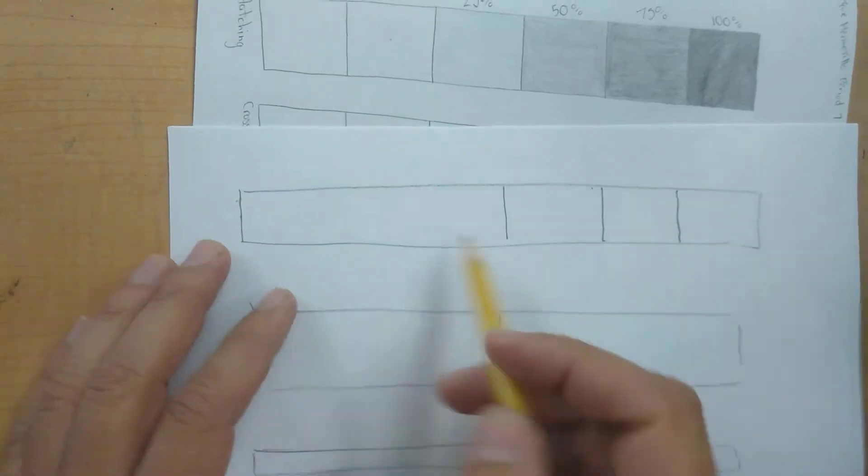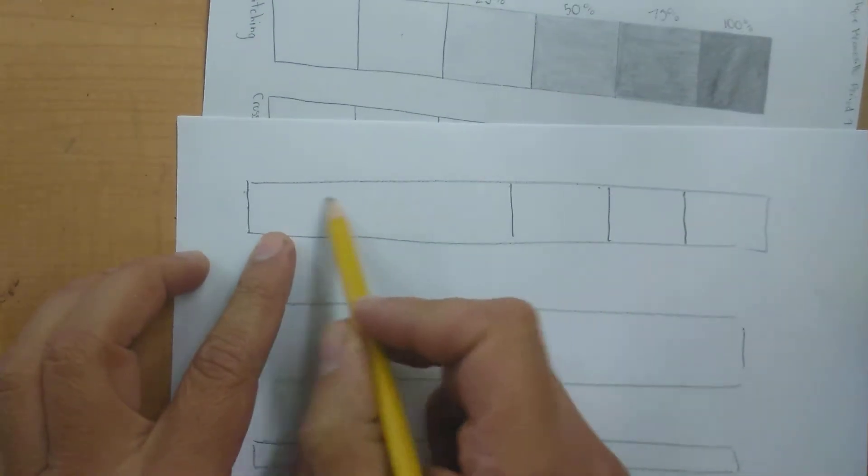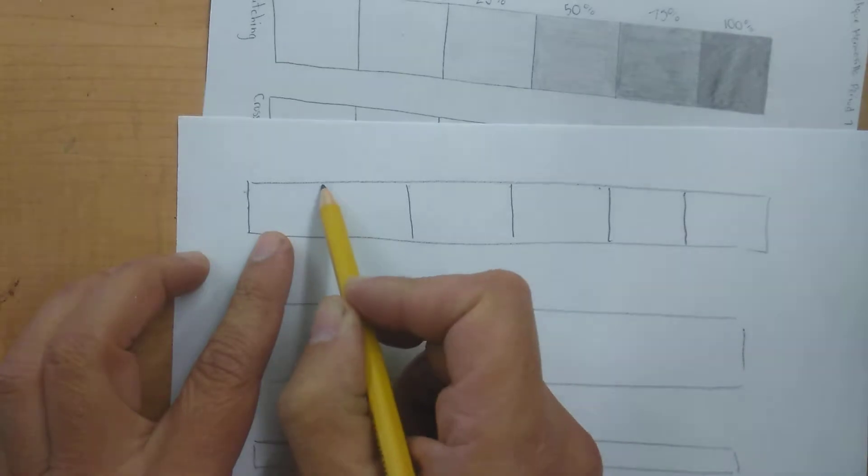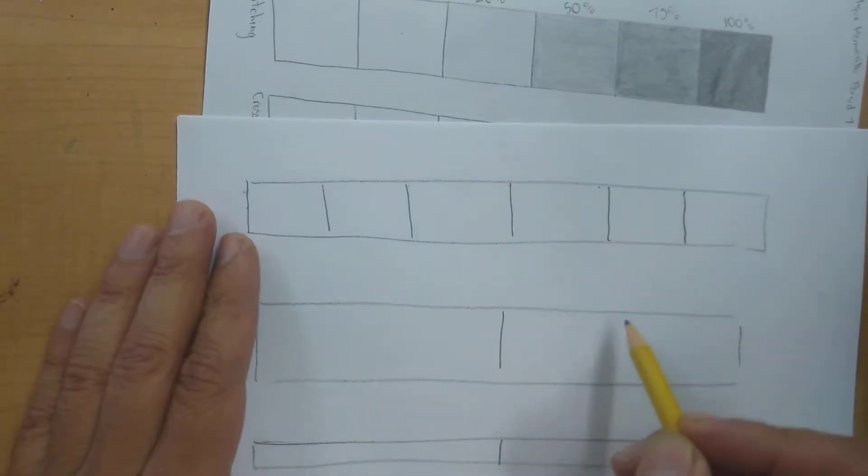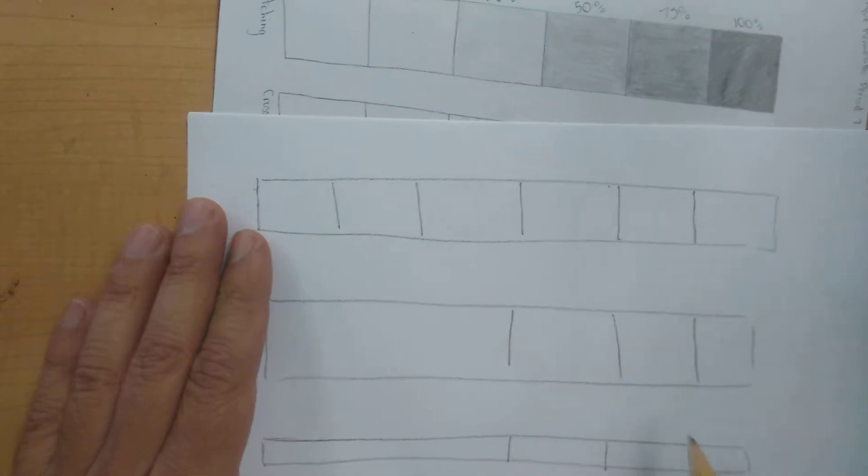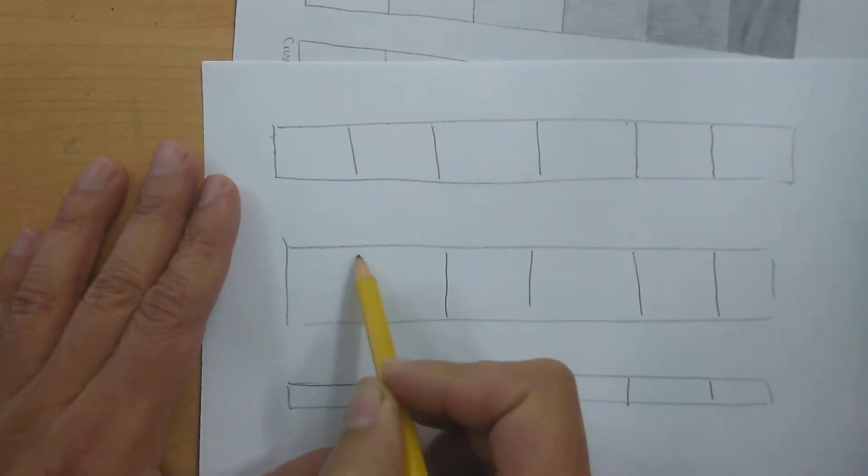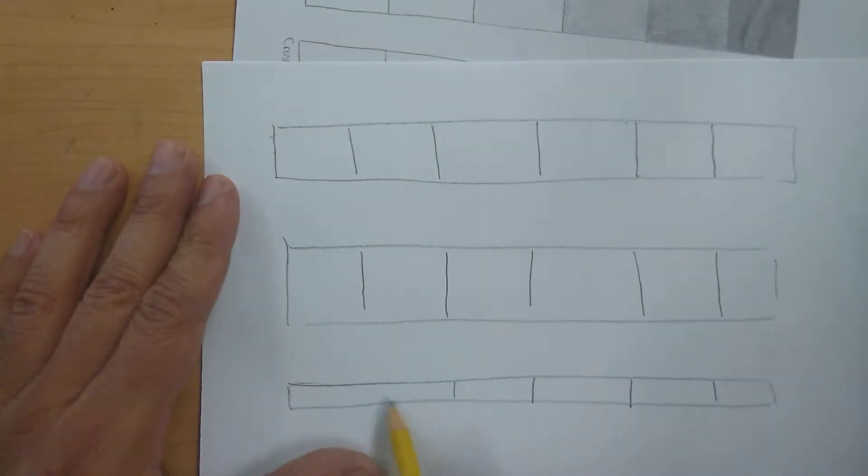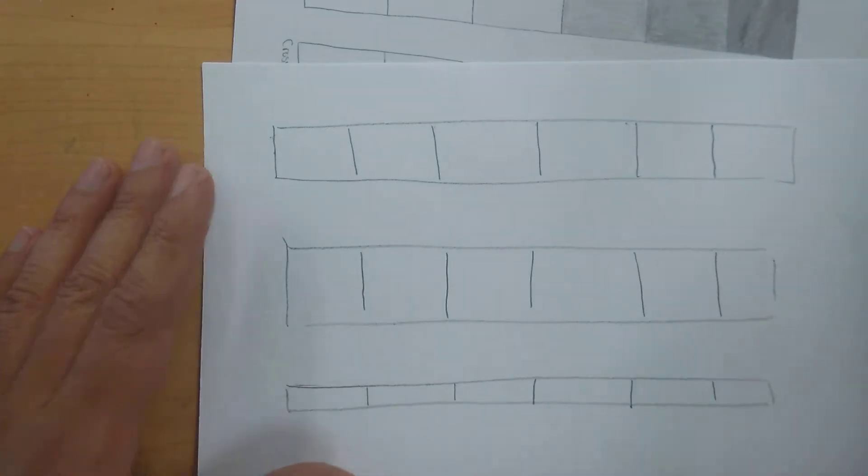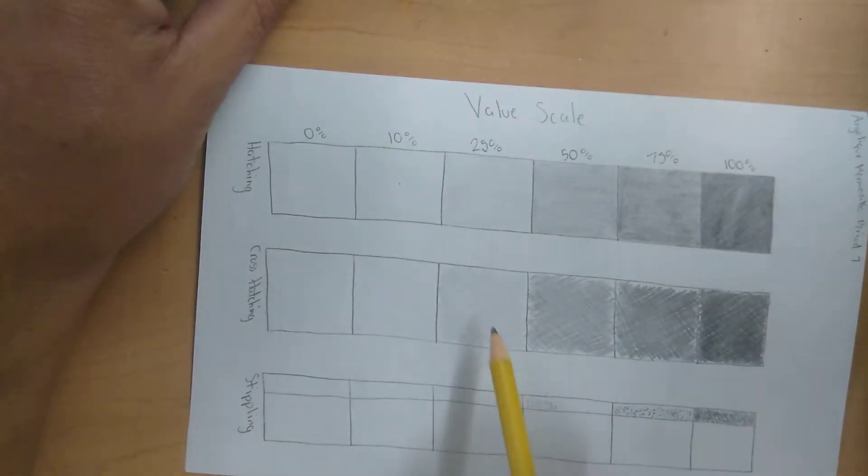Same thing on this side. Split it up into three sections by adding two lines. And then you can bring those lines all the way down to your other scales. This is pretty messy because I'm doing it without a ruler, but just so you can get an idea of how it's supposed to look really fast.